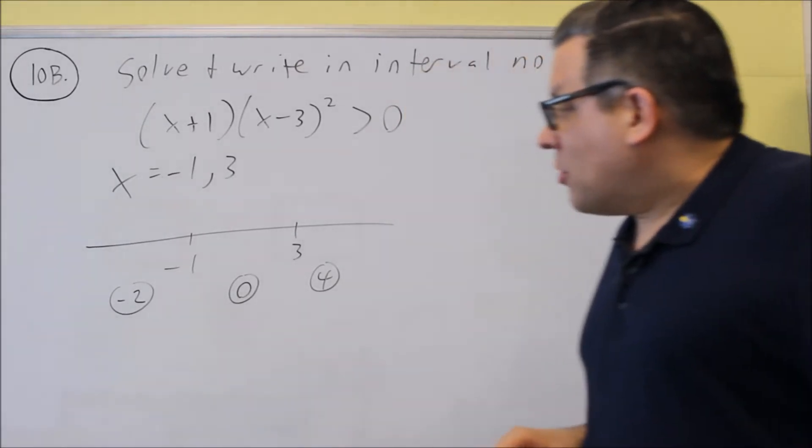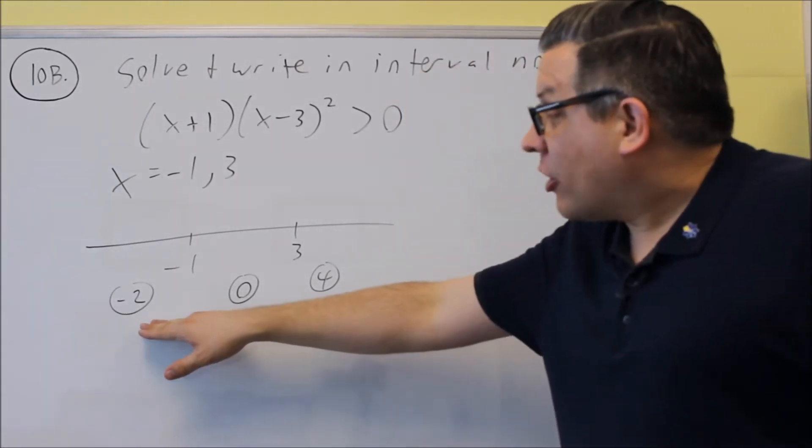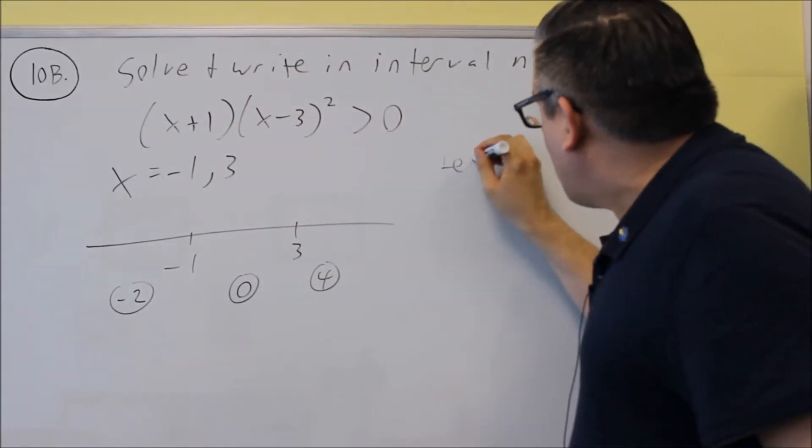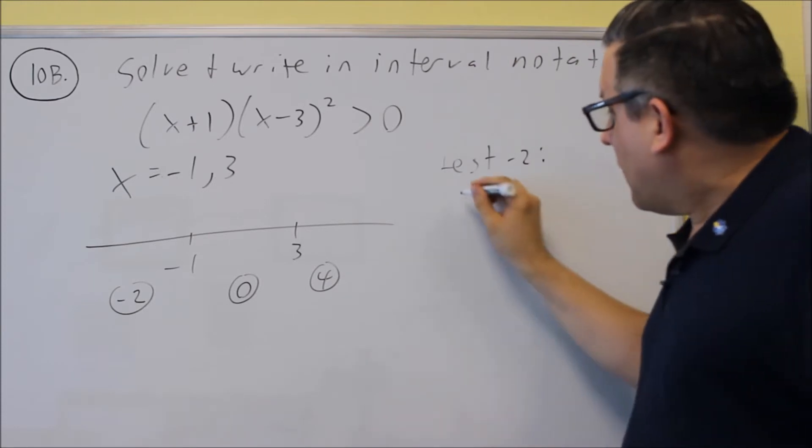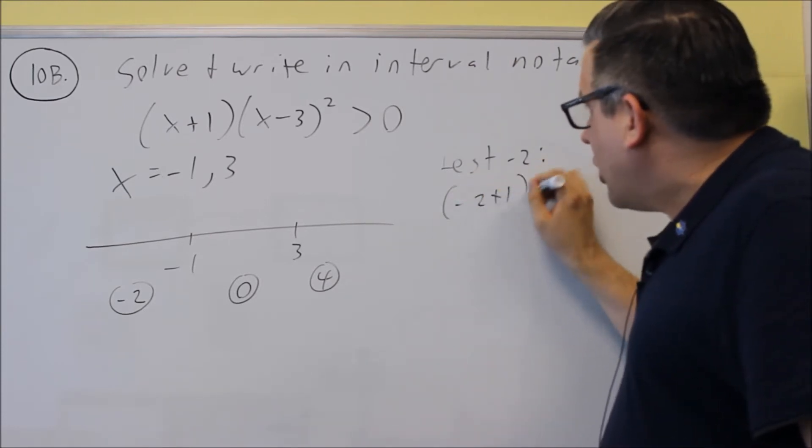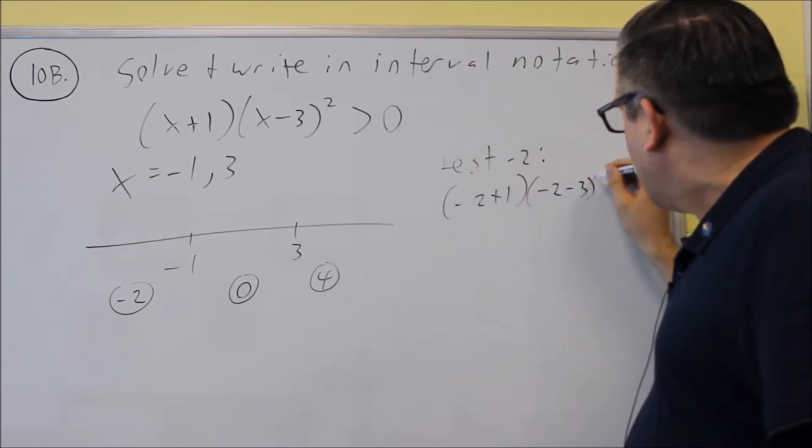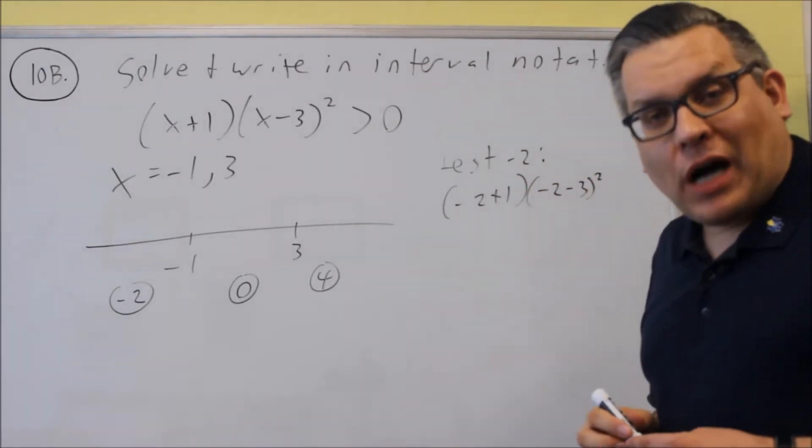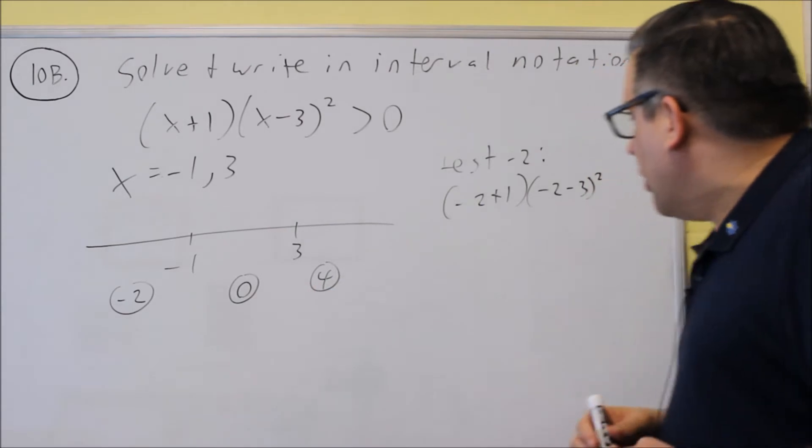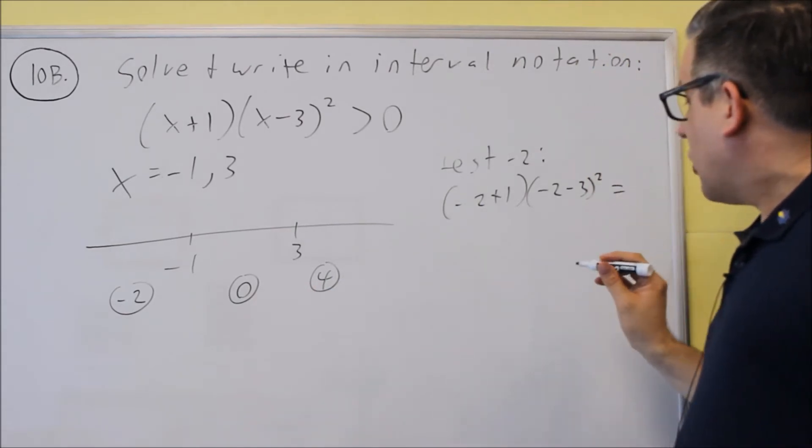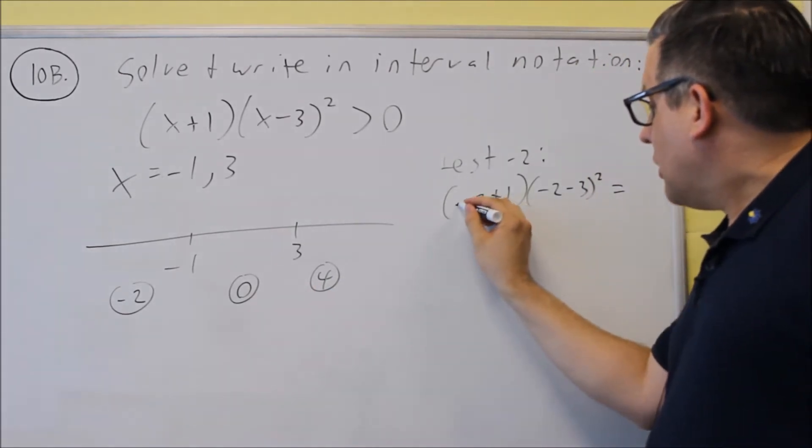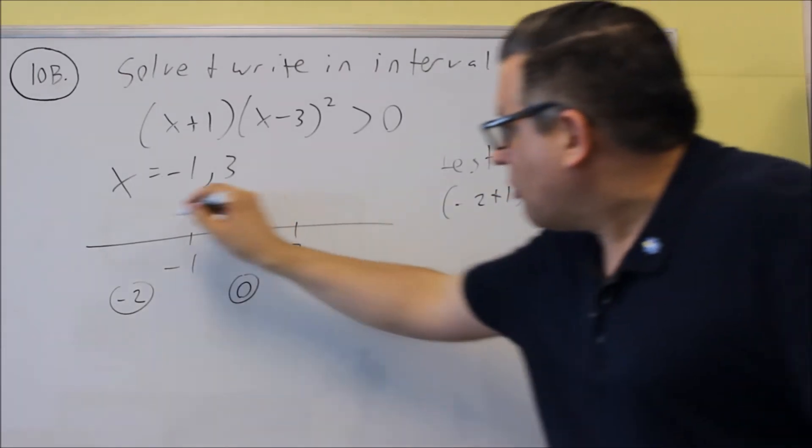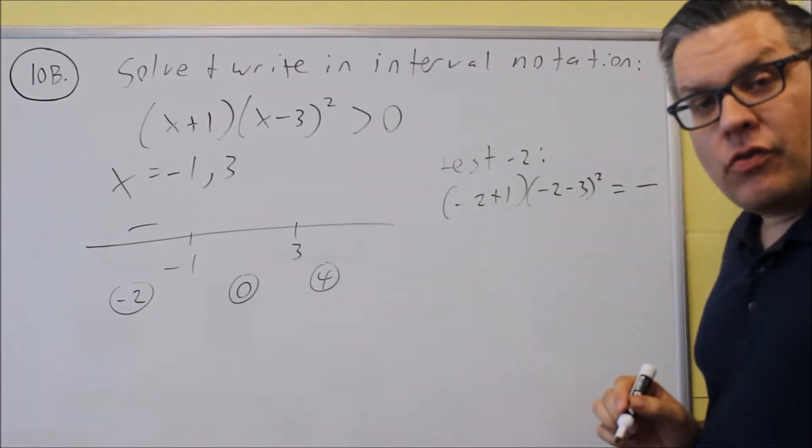When I take the test number, I'm now going to put it into the entire thing at once. So I'm going to test negative two, and I'm going to do negative two plus one, negative two minus three squared. And again, I'm only concerned about whether I get a positive or a negative number that I'm going to put here. As a result, what will happen is I get a negative number here. This will give me a positive number. The result is going to be a negative. So I'm going to put a negative there with a negative one.